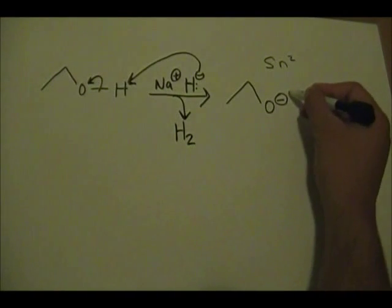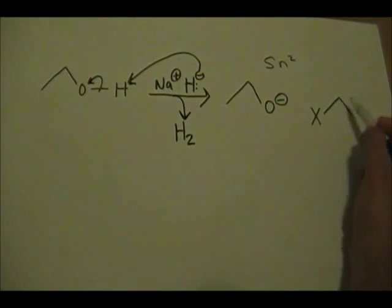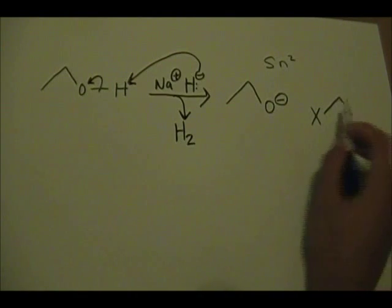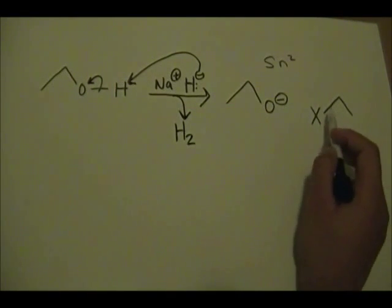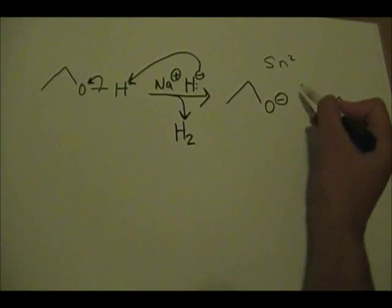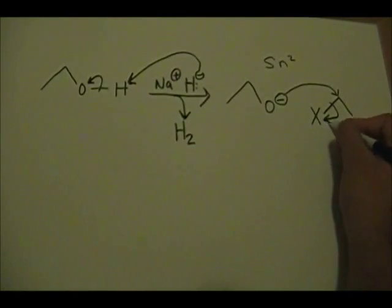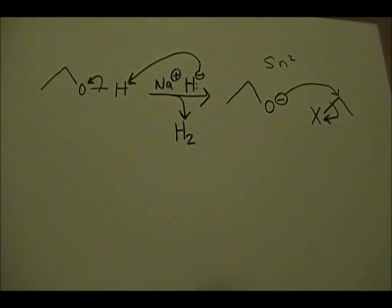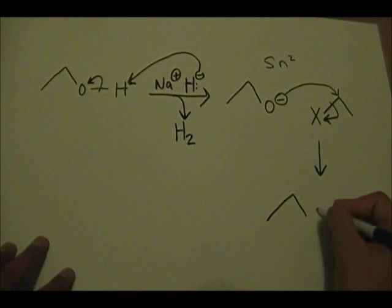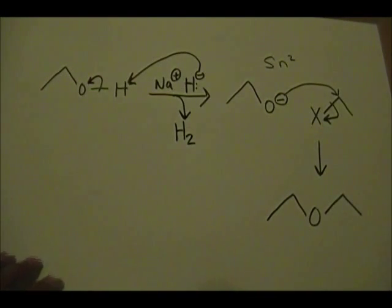What happens is this oxygen forms a bond with this carbon here while kicking off the halogen with a pair of electrons. The product of this step is your ether. That's all it is to the Williamson ether synthesis.